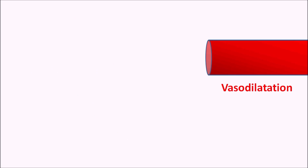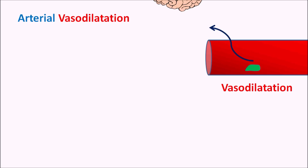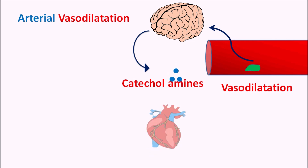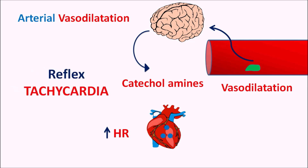Alpha blockers can produce arterial vasodilation, which is detected by the baroreceptor reflex. When perfusion pressure is reduced, signals are sent to the CNS, which releases catecholamines that increase sympathetic activity. These catecholamines act on the heart to increase the rate of contraction. In this way, arterial vasodilation can increase heart rate — not as a direct action but as a reflex action — producing reflex tachycardia as another side effect.